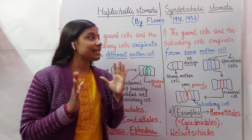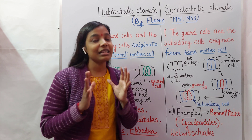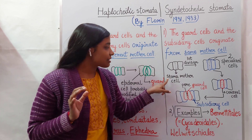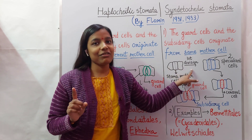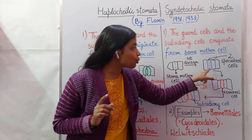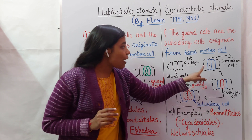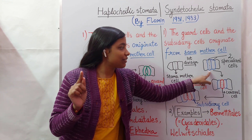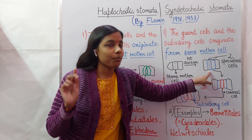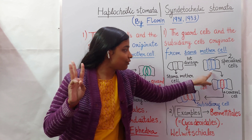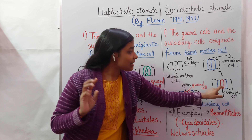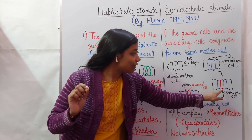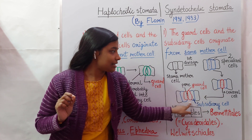Now coming to the syndetochelic type of stomata. Here the stoma mother cell undergoes a first division and gives rise to two specialized cells. Out of these two specialized cells, one cell undergoes division again and forms two cells, so ultimately we have three cells.